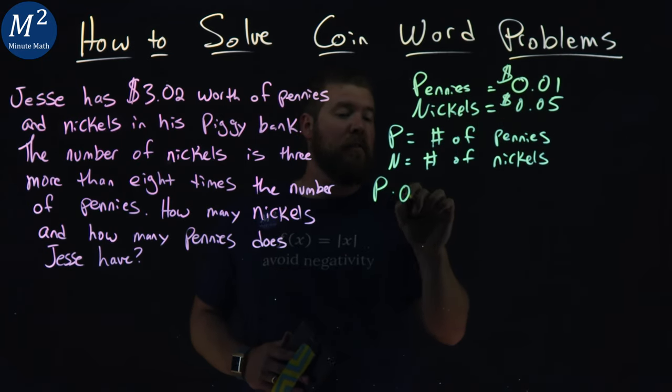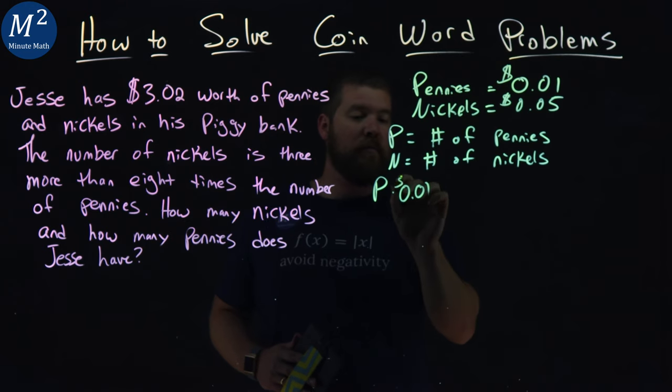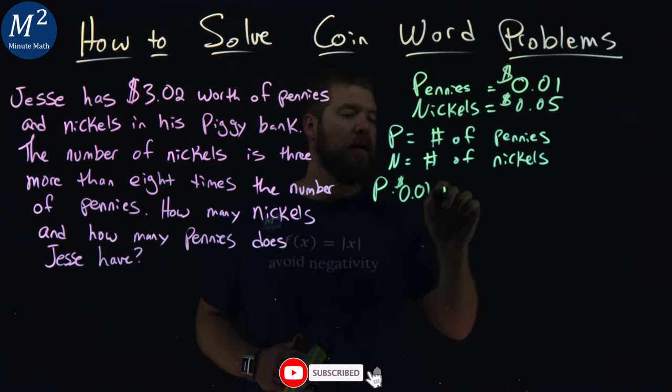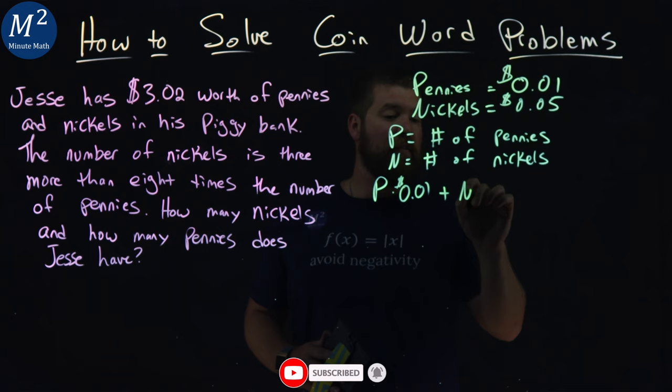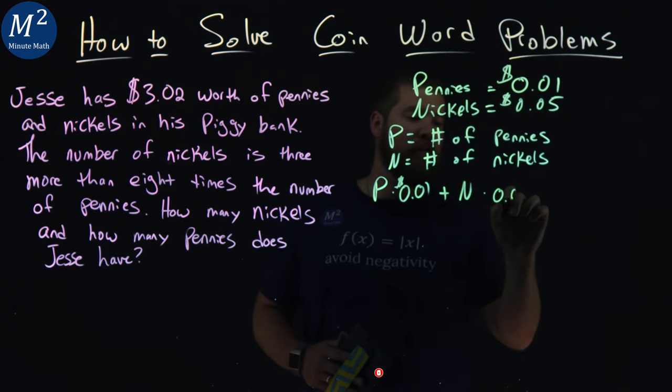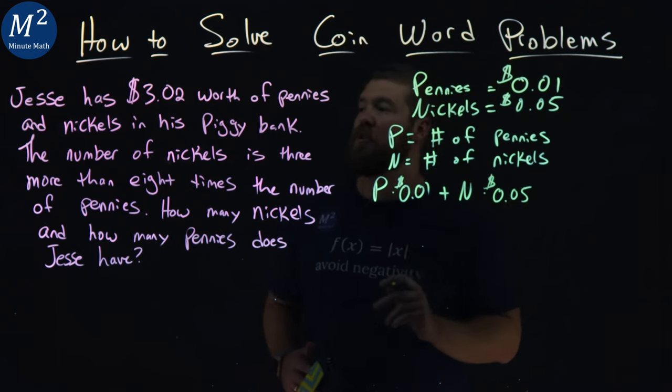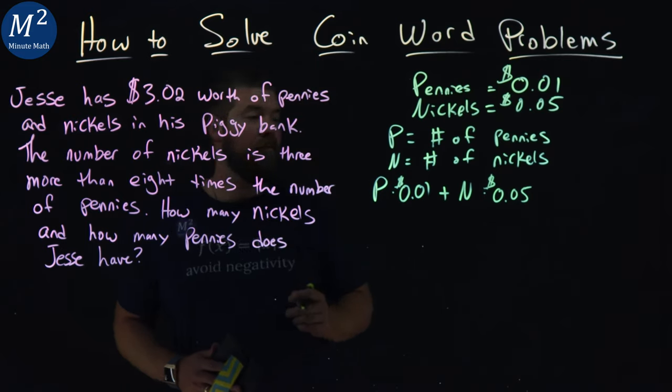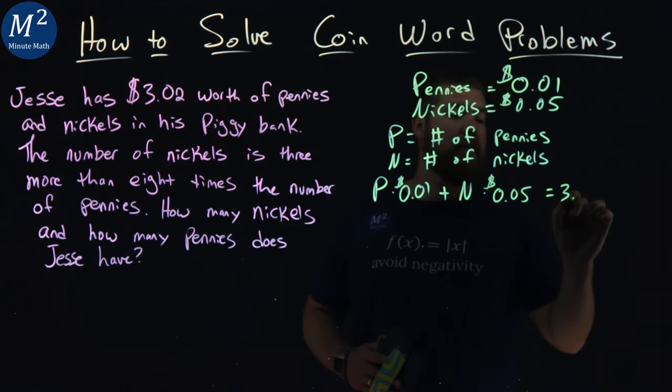It's going to be p times 0.01, the number of pennies times the cost of each penny, plus n, the number of nickels, times 0.05, which equals the total amount Jesse has, $3.02.